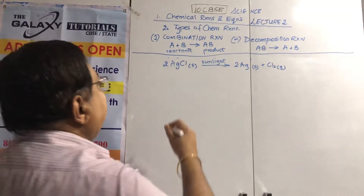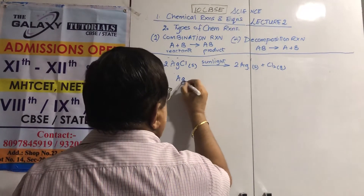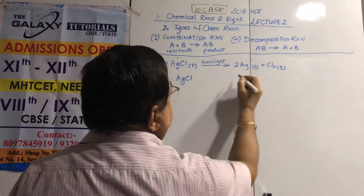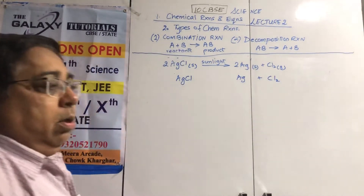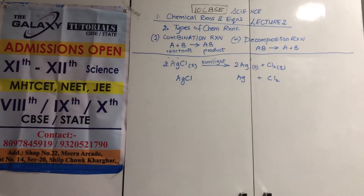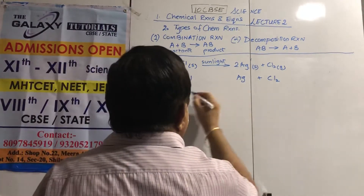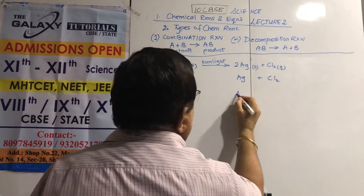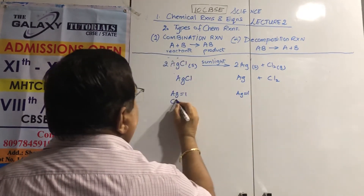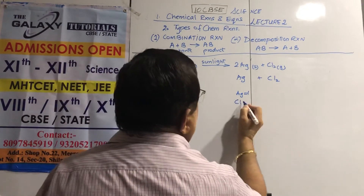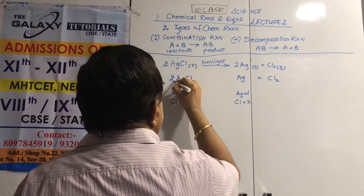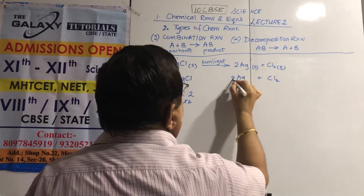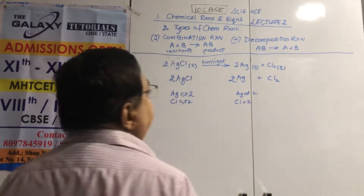How to balance: silver chloride is AgCl, silver is Ag, chlorine is Cl2. Silver is 1 on both sides — fine. Chlorine is 1 on the left but 2 on the right, so put a 2 before AgCl — now silver is 2 on both sides, chlorine is 2 on both sides. Balanced.